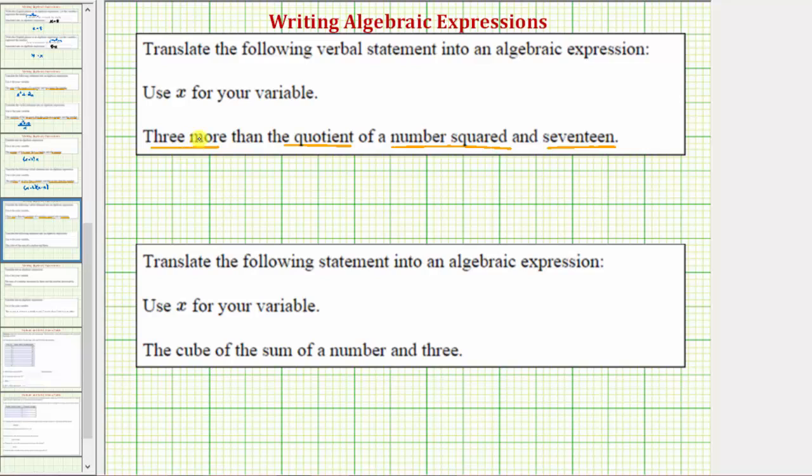To get three more we'll have to add three. But before we add three, let's determine the quotient. We have the quotient, which means division,